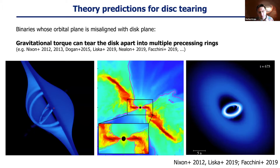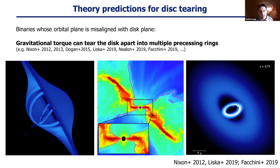One of these hydrodynamic effects proposed in the literature, but not yet seen in action, is the disk tearing effect. This is proposed to happen when you have a binary whose orbital plane is misaligned with respect to the plane of the disk. The theoretical prediction is that the gravitational torque from these misaligned binaries can tear the disk apart and produce precessing rings that have separated from the disk and now move independently around the system.